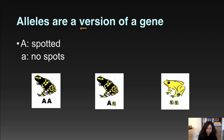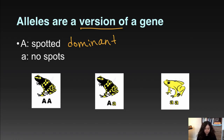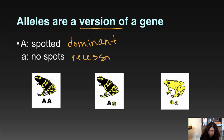An allele is a version of a gene. In this example, frogs have two different skin colors. If they have the dominant allele, they'll be spotted — we write the dominant allele by convention with a capital letter. If they have two recessive alleles, they'll have no spots. This is a regular complete dominance gene.